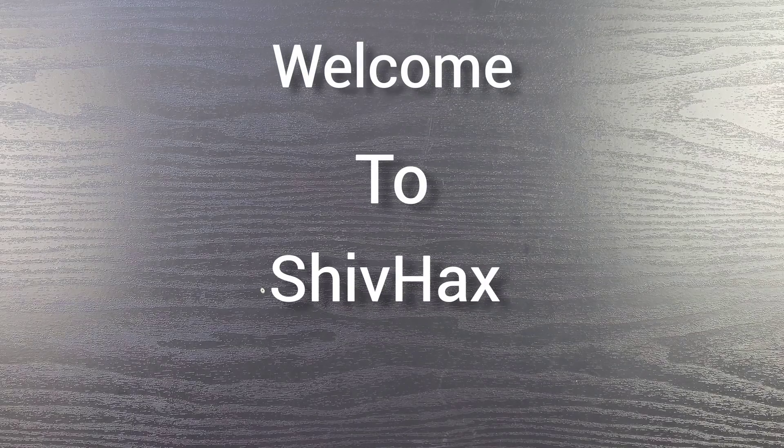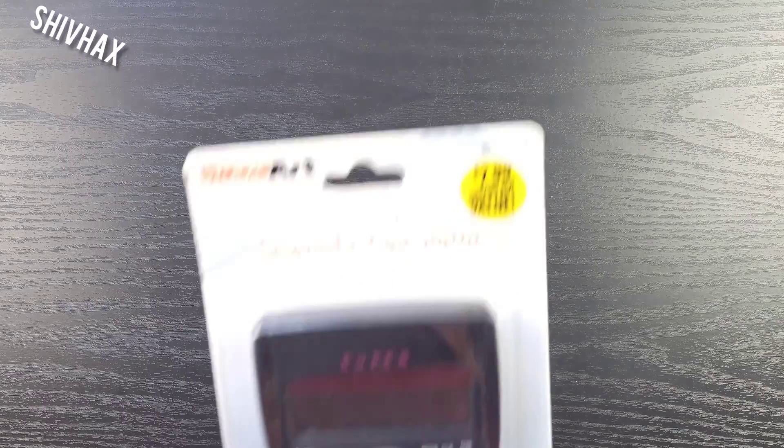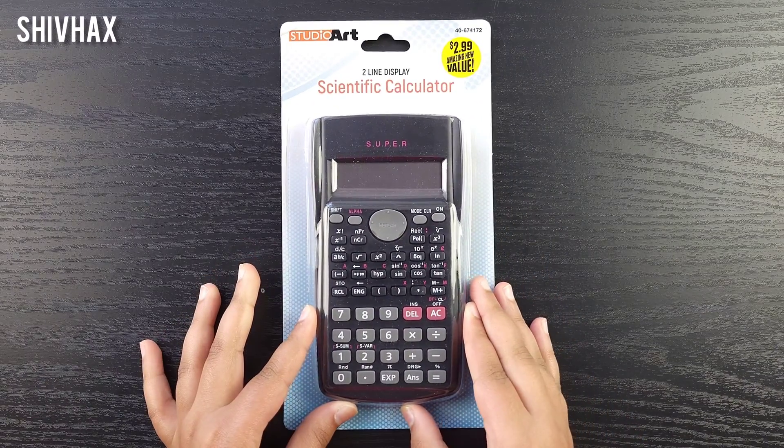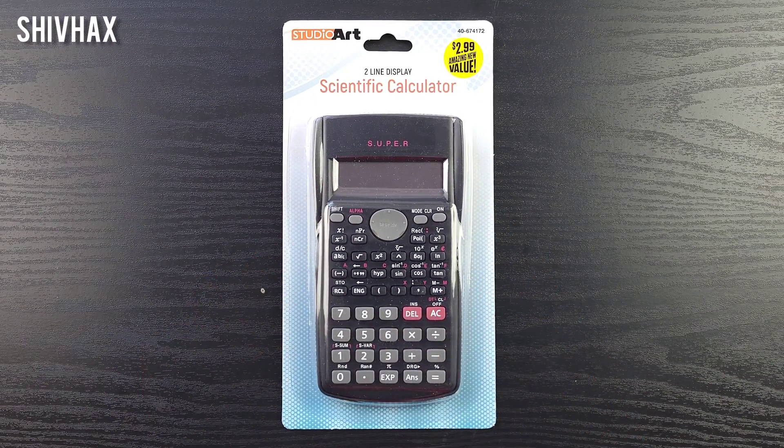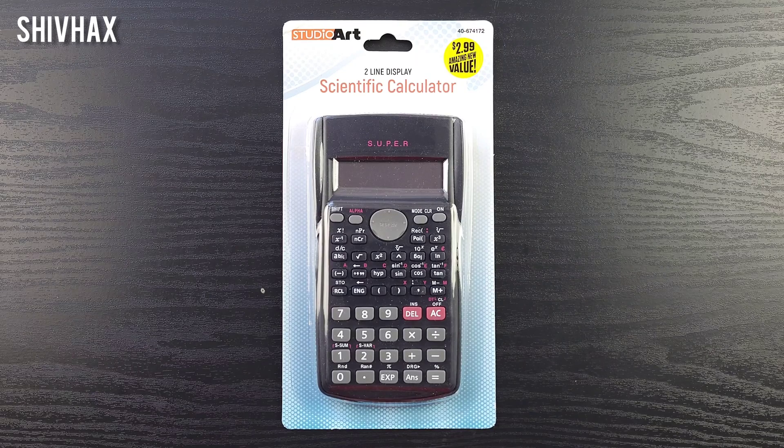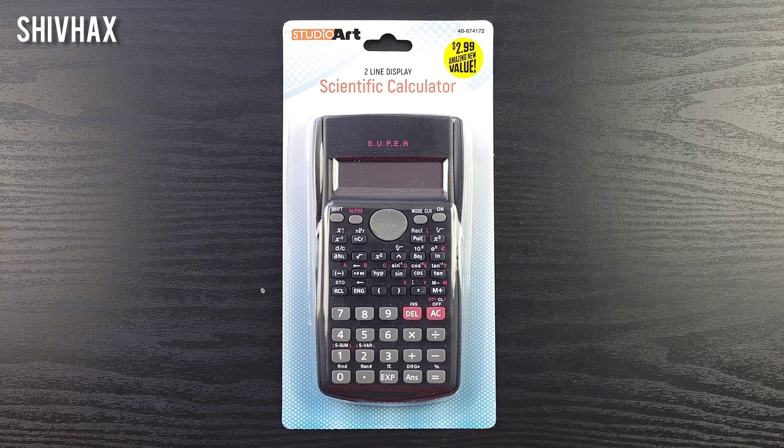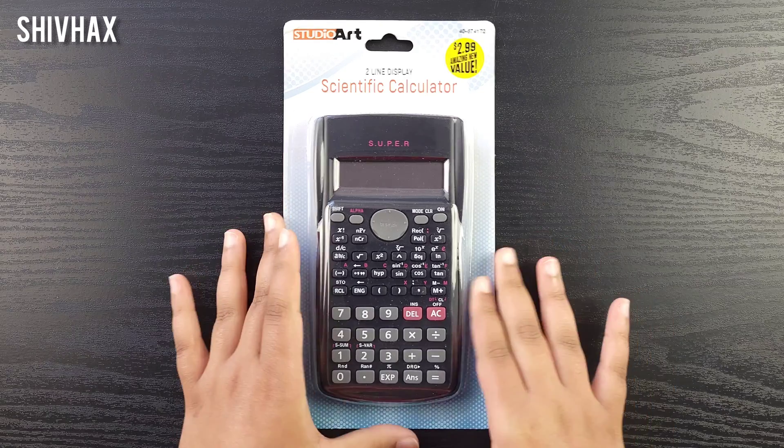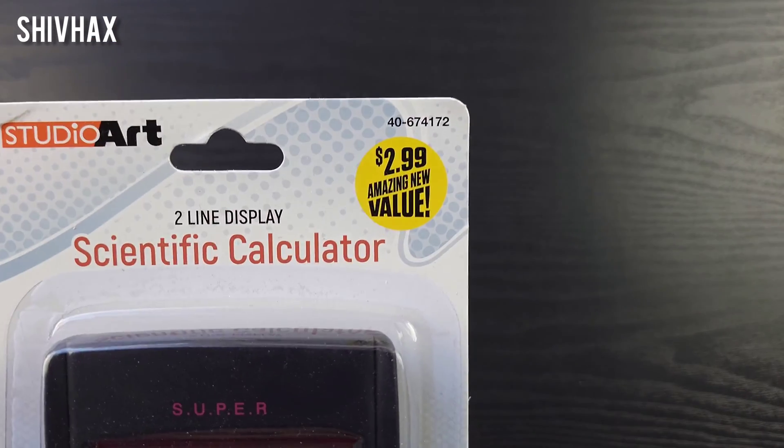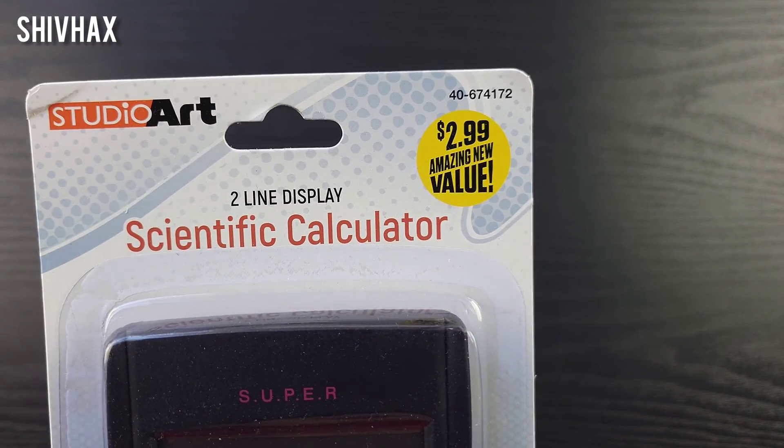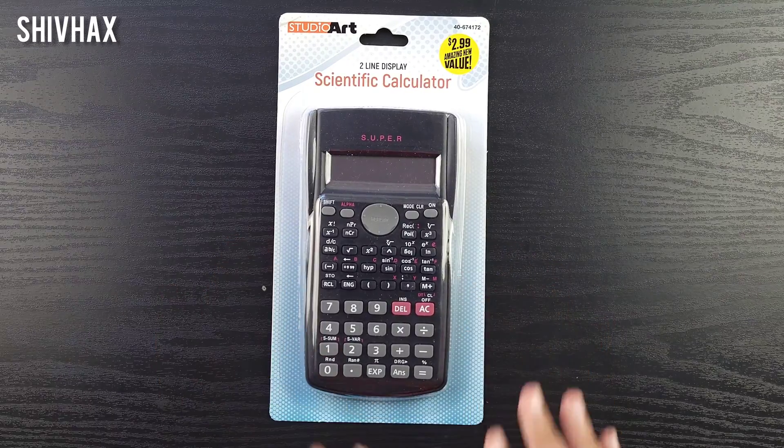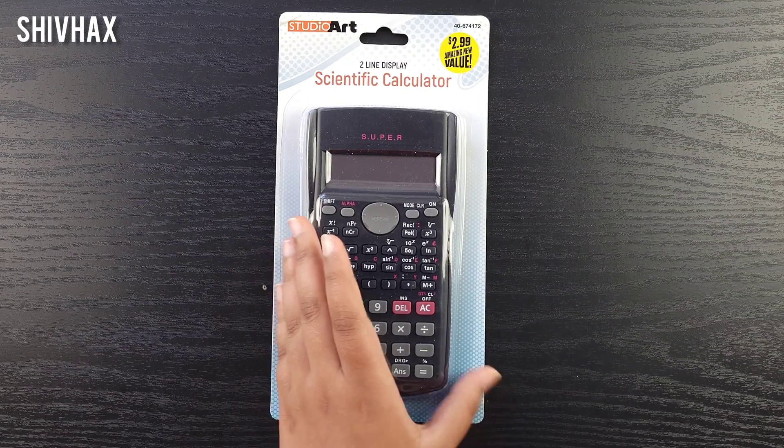Hello friends, this is Shiv Hacks back with another video. Today we're going to be unboxing this Studio Art 2-line display scientific calculator. I bought this at the 99 Cent Store and the price listed is $2.99, so it's a great value for a scientific calculator. Now let's open this.